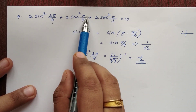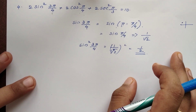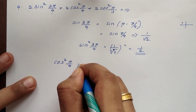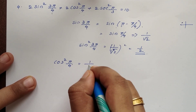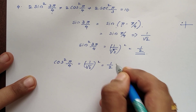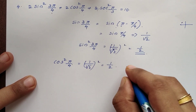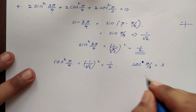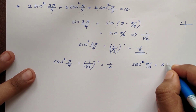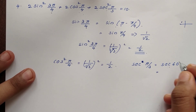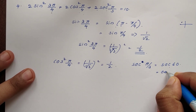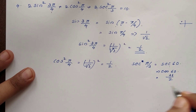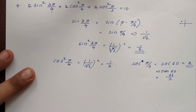Add to cos²(π/4). cos(π/4) equals 1 by root 2, so cos²(π/4) equals 1 by 2. Then add sec²(π/3). π by 3 is 60 degrees. sec 60 value is 2, so sec²(π/3) equals 4.